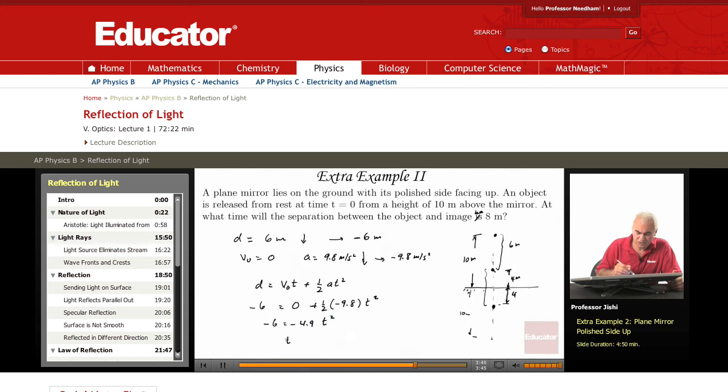So T squared is 6 over 4.9, which equals 60 over 49. So T is the square root of that. The square root of 60 is a little bit less than 8 - that's 7.7.